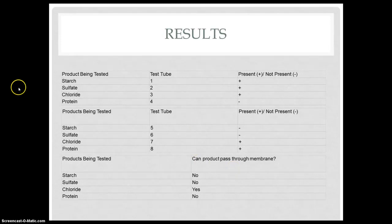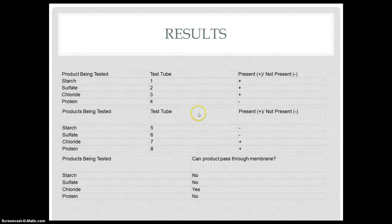These are our results. The products tested were starch, sulfate, chloride, and protein. Test tubes 1 through 4 were from the beaker fluid representing the extracellular fluid. Test tubes 5 through 8 were from the dialysis tube representing the cytosol in the cell. Starch had a positive test result in the beaker fluid but a negative test result in the dialysis tube, meaning starch cannot pass the membrane because it is too big. Sulfate also tested positive in the beaker fluid but negative in the dialysis tube, meaning sulfate ions cannot pass the membrane because they are too big.